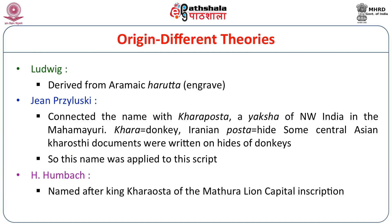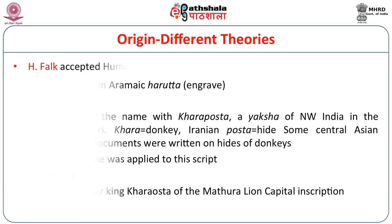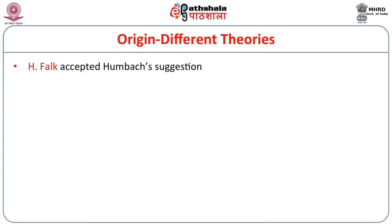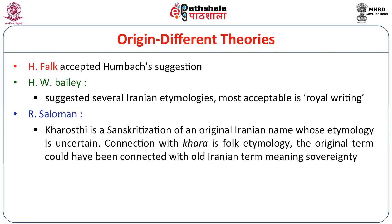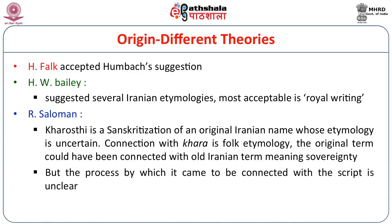H. Humbach suggested the name Kharosthi was derived from King Kharoshti mentioned in the Mathura lion capital inscription, a Kushana period inscription. Harry Falk accepted this suggestion. H.W. Bailey proposed several Iranian etymologies, the most acceptable being 'royal writing'. Richard Salomon, an eminent epigraphist, has suggested Kharosthi is a Sanskritization of an original Iranian name whose etymology is uncertain, and that the original term may have been connected with an Old Iranian term meaning sovereignty.